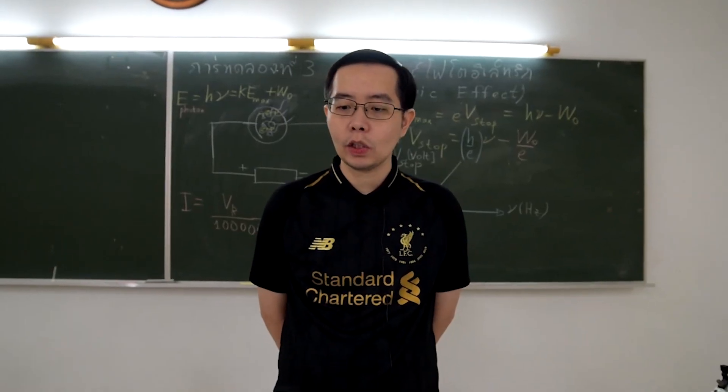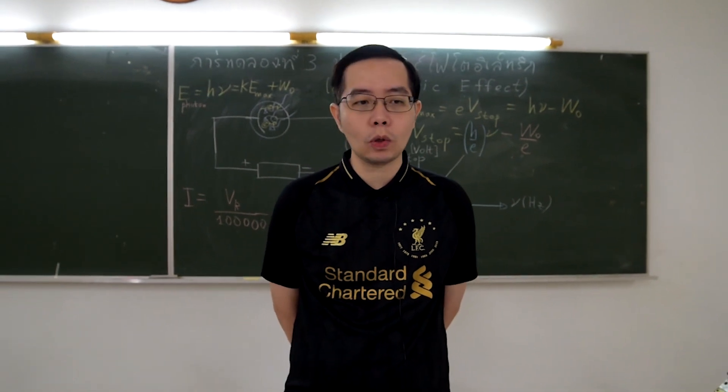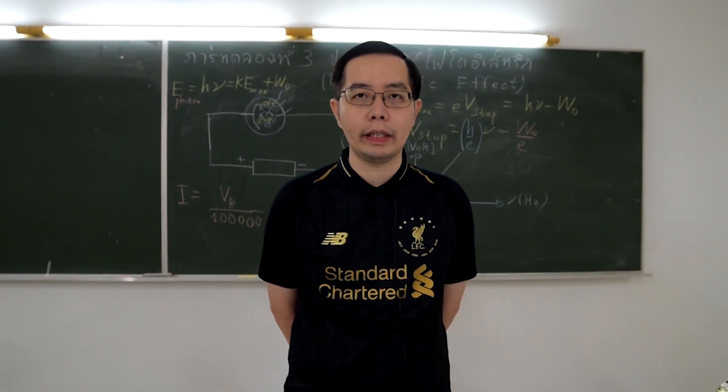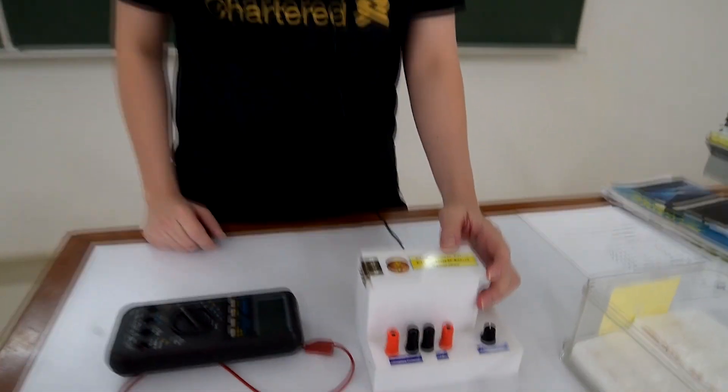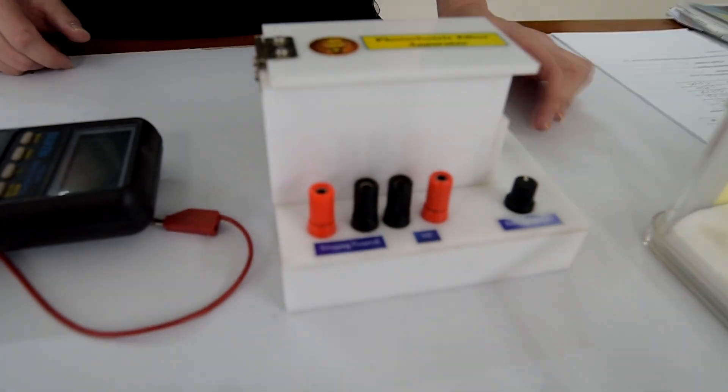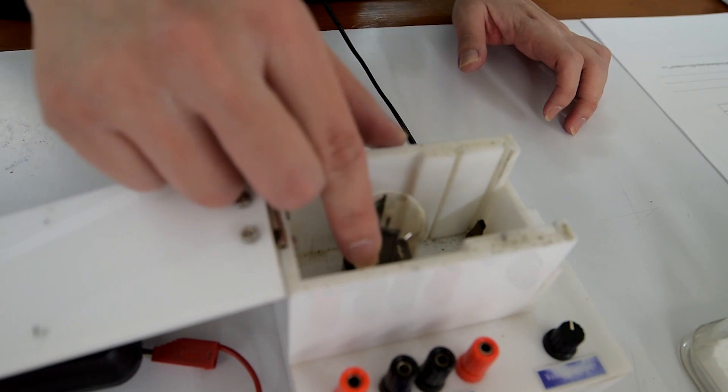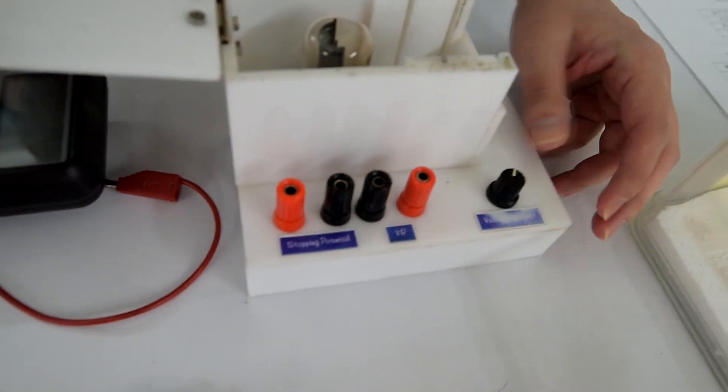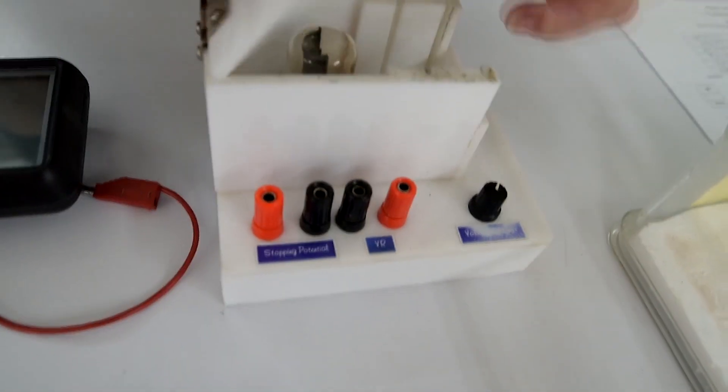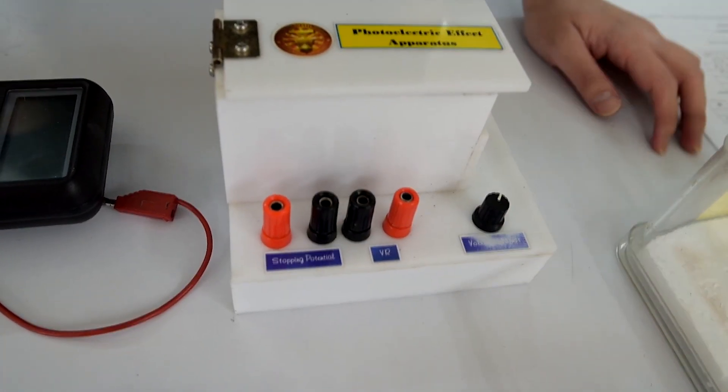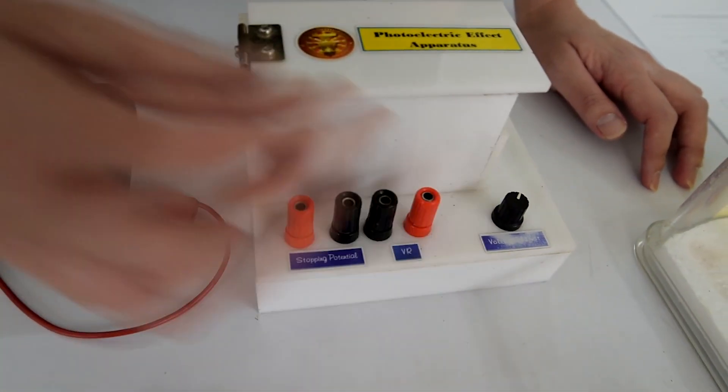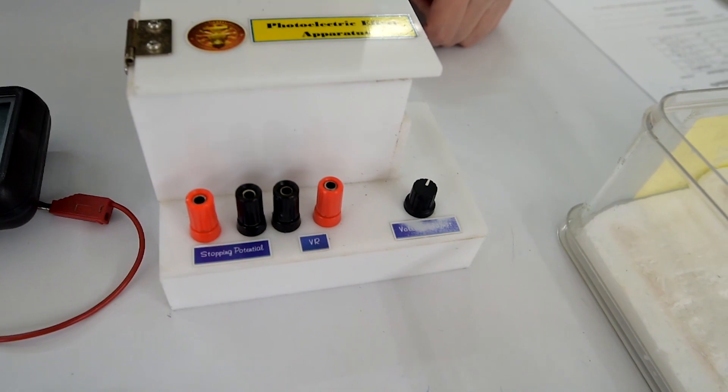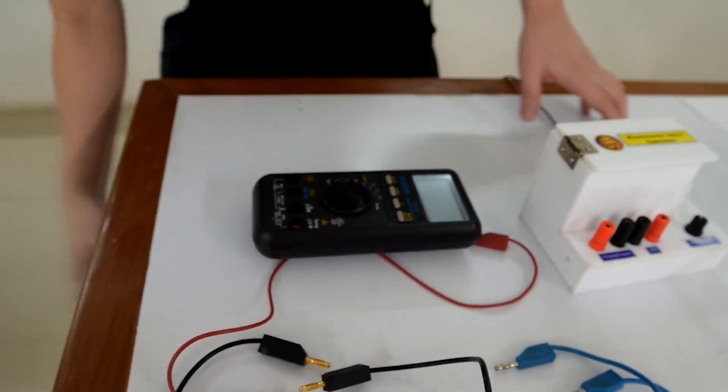The experiment consists of two parts. The first component is the photoelectric experiment set box which has a cathode tube or metal surface inside the box. Here is the voltage adjustment knob. Here are the terminals for potential measurement, which are stopping potential and potential of moving photoelectron or VR. Plug in the experiment set box.